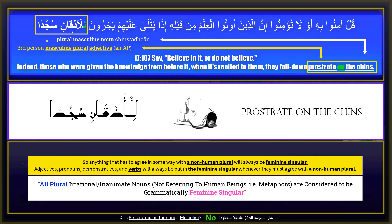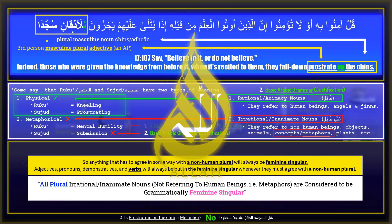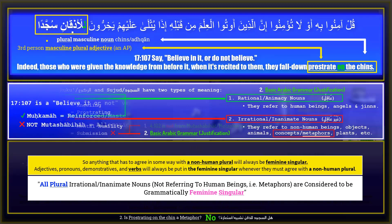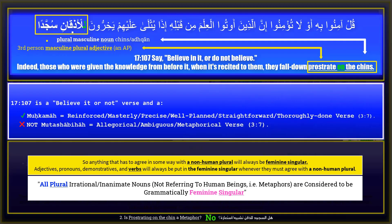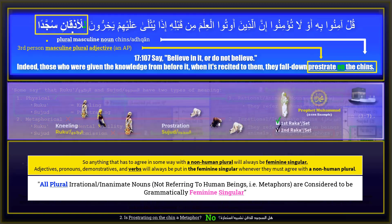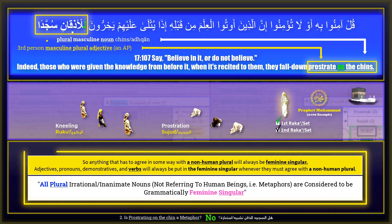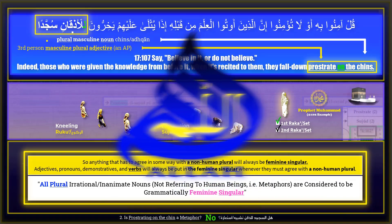This is undisputed, and it exposes all those who have basic or no knowledge of Arabic grammar — it is obvious for those who know. And Allah knows best. Surah 17 verse 107 is a 'believe it or not' verse, and it is a muhkamah — reinforced, straightforward verse — to fall prostrate on the chin. It is not allegorical, metaphorical, or mutashabihat. This grammatically ends this debate. And Allah knows best.